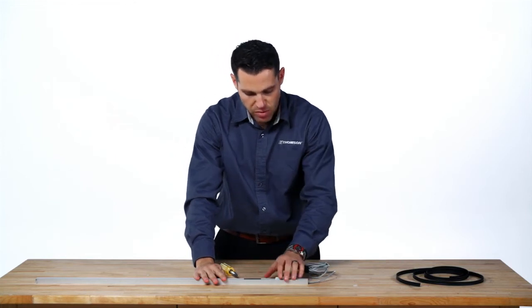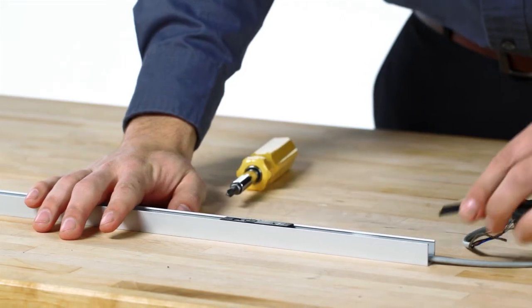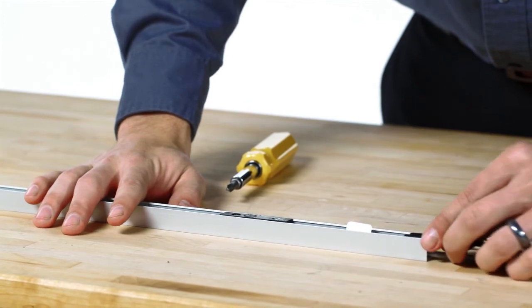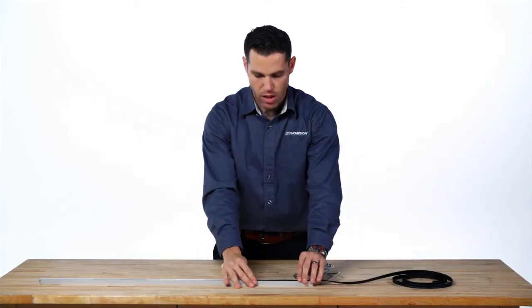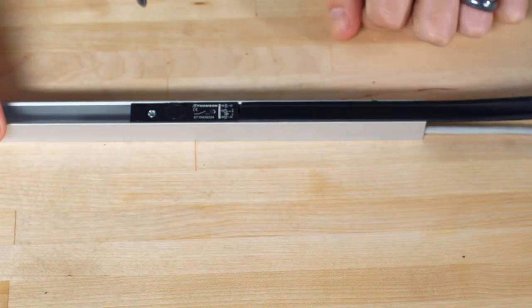Now we do provide a cover strip that provides some aesthetic protection for the cables for the limit switches. So this also just slides into the track. And you can see this provides a nice aesthetic cover for the limit switch cables.